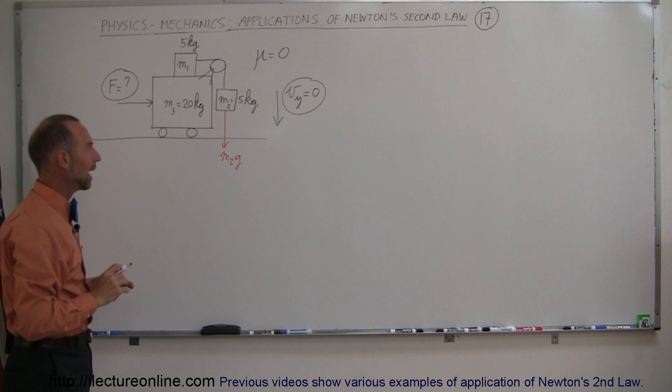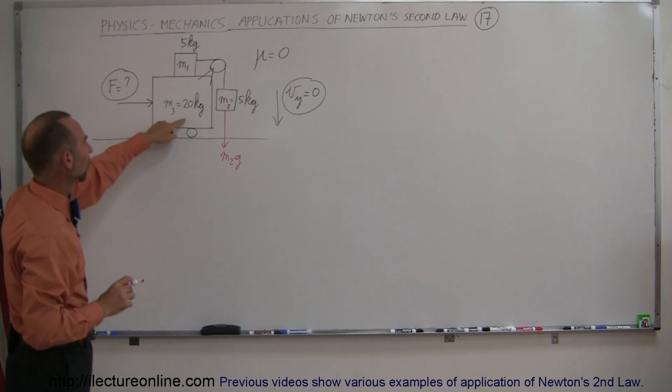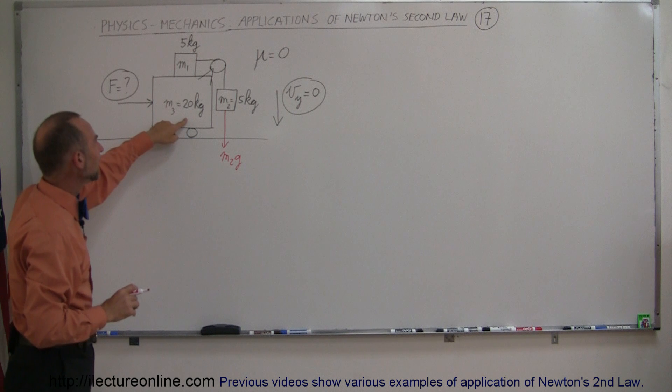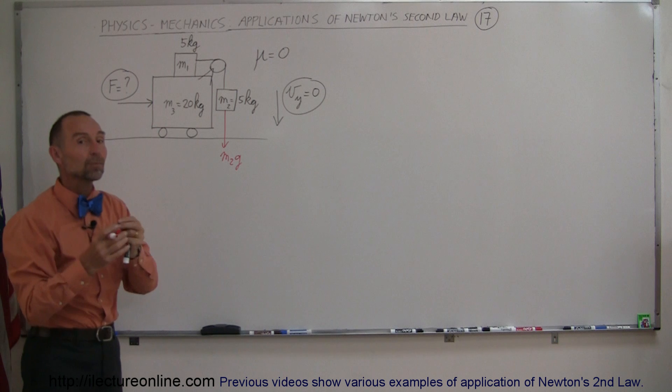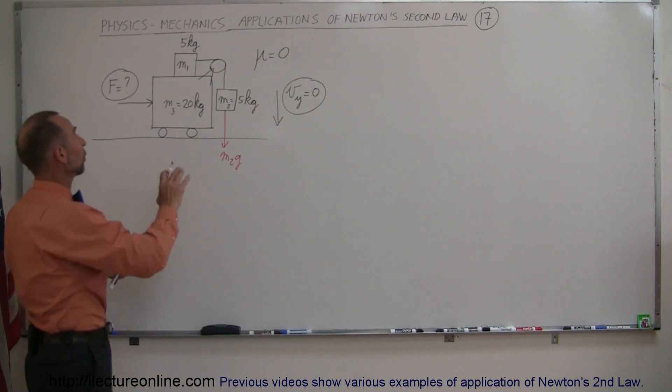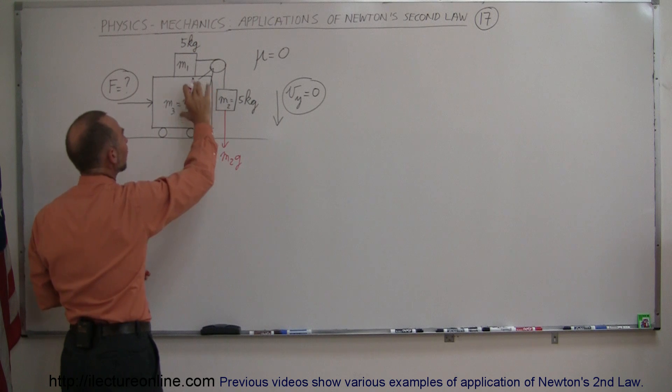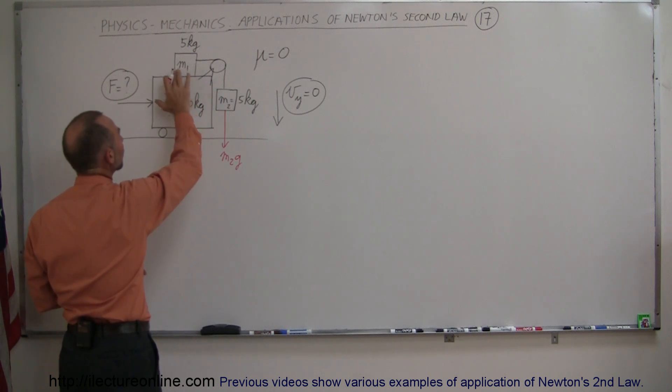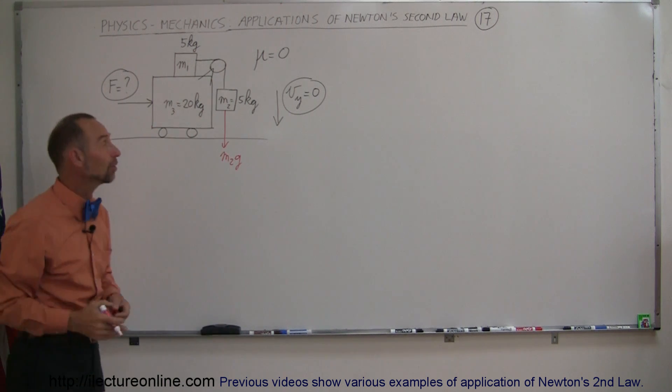But what happens if you push on this hard enough so that the acceleration of this block equals the acceleration of M1 so that relative to one another M1 and M3 do not move relative to one another. So whatever acceleration M1 has M3 will match that, and if that's the case M1 will not slide forward relative to M3 which means that M2 will not slide downward because there's not enough string to do that with.